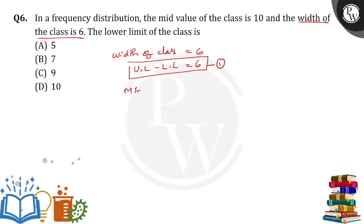And what do you mean by mid-value? Mid-value is 10. What is the formula to find the mid-value? Upper limit plus lower limit divided by 2 equals 10, so upper limit plus lower limit is 20. Take this as equation 2.